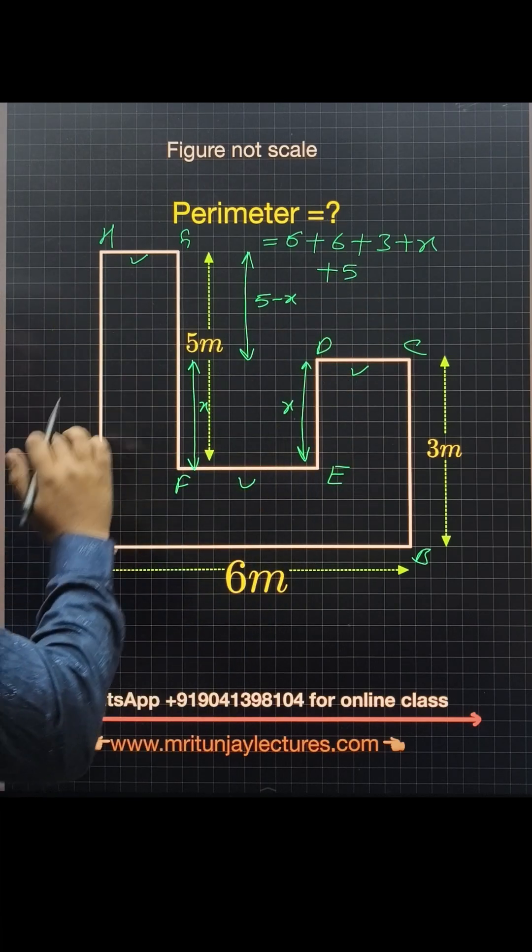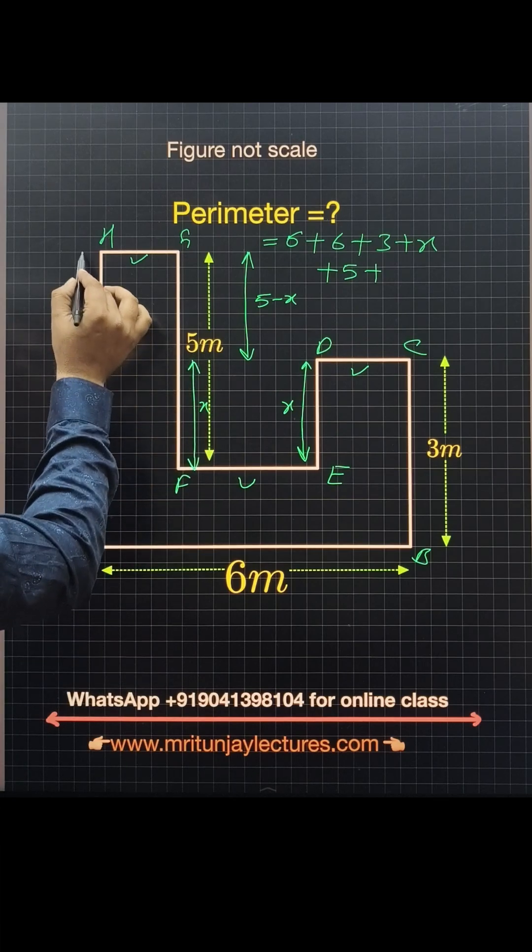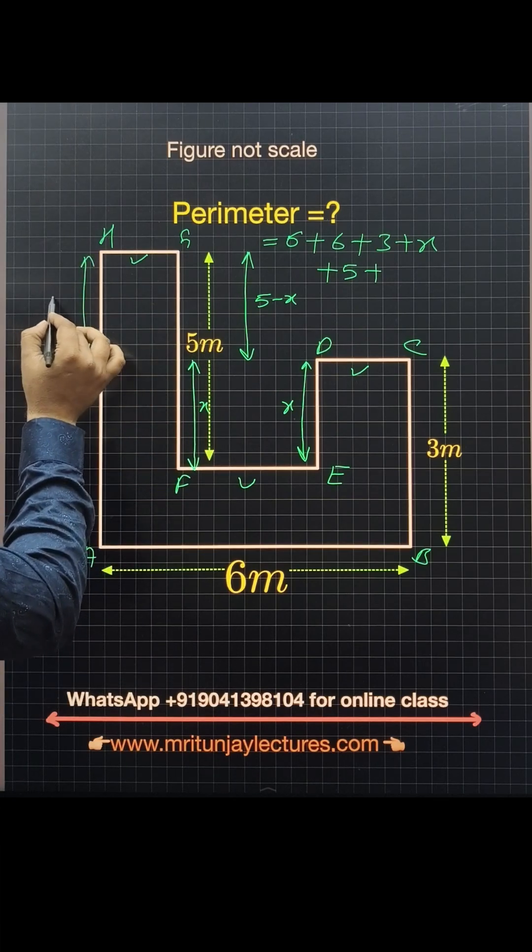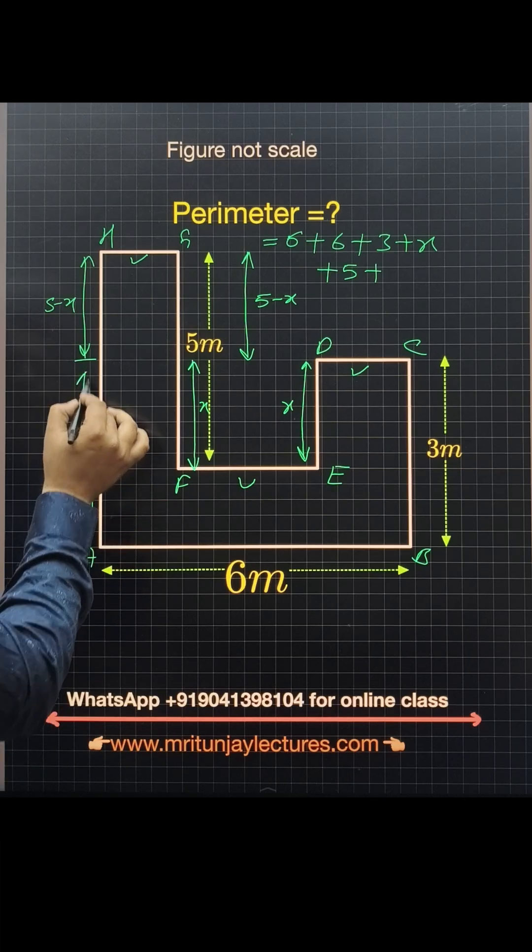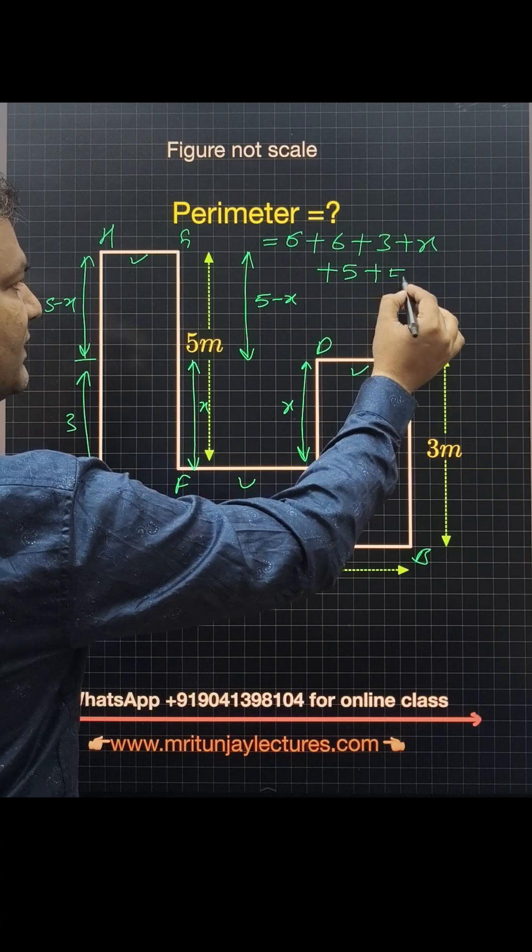After that, what about this distance? Look, from here to here is 5 minus x. From here to here is 3. So 5 minus x plus 3.